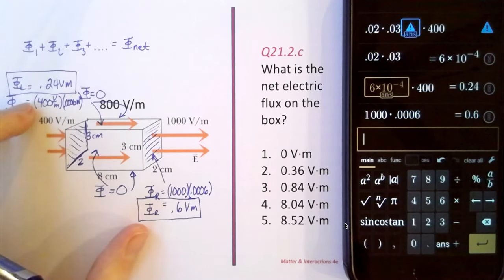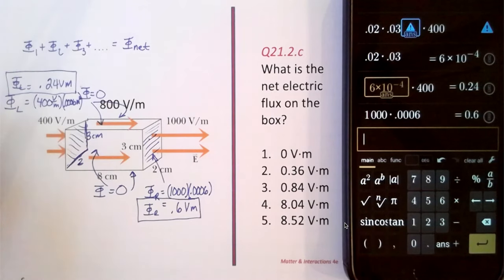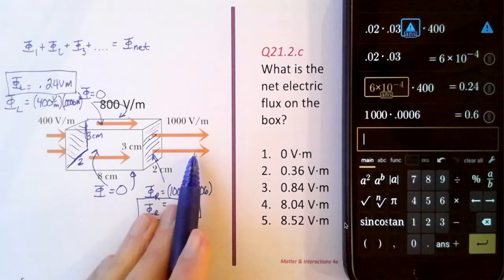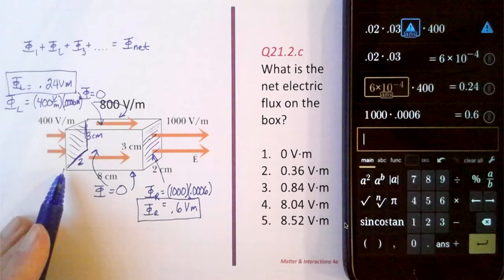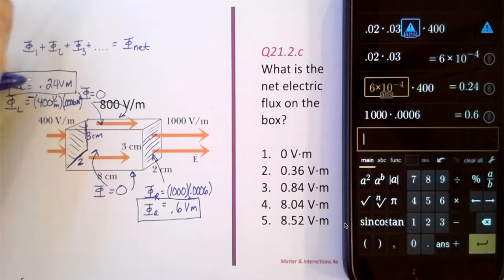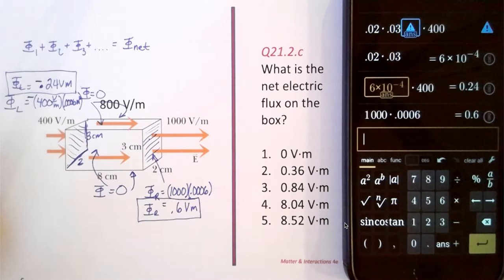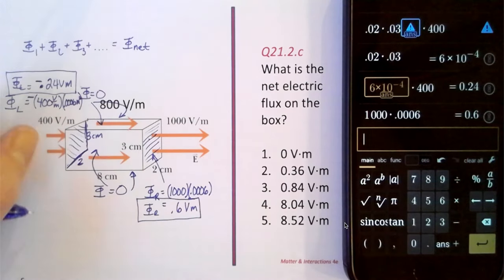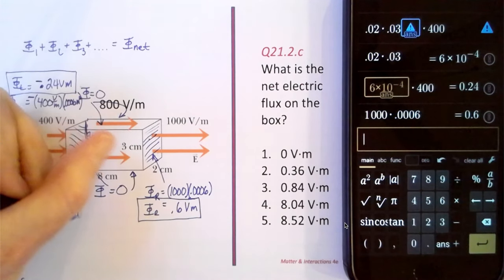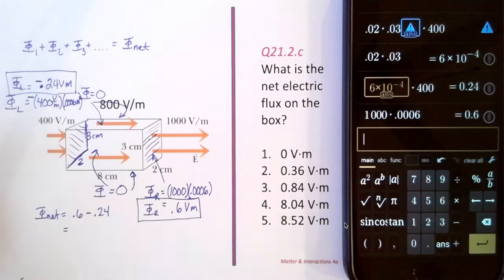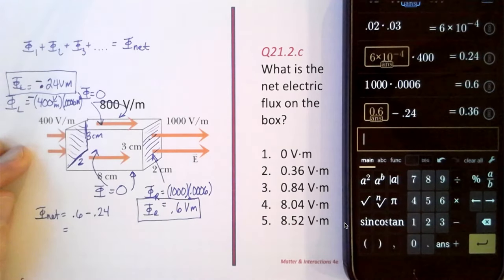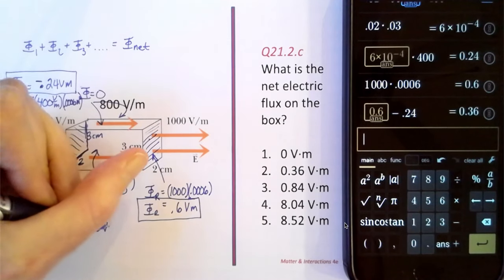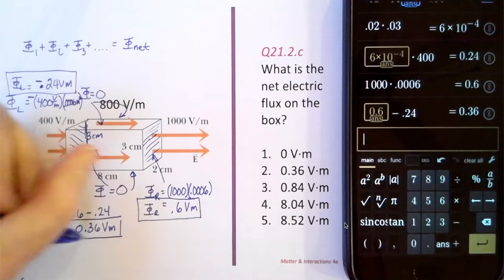And then the total flux is going to be the sum of the two. But I did make one little mistake. And that is that on the left hand side, the electric field is going into the box. And on the right hand side, the electric field is coming out of the box and I neglected to take into account the direction of the flux. On the left hand side, the flux is negative. So that's negative 0.24 volt meters. And on the right side, the flux is coming out of the box where the field is coming out of the box. So the flux is going to be out of the box and positive, which gives us positive 0.6. So the net flux is going to be 0.6 minus 0.24, which is going to be 0.36 volt meters, which is choice 2.